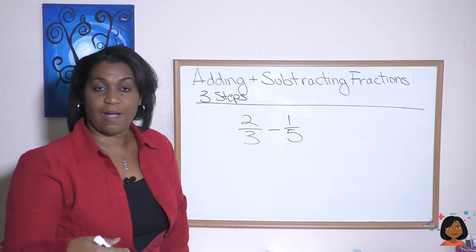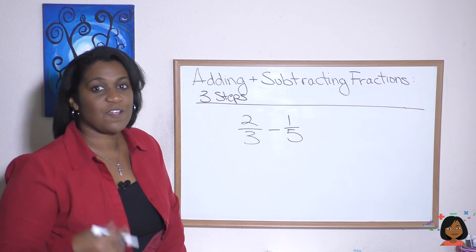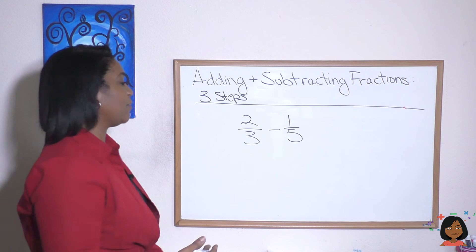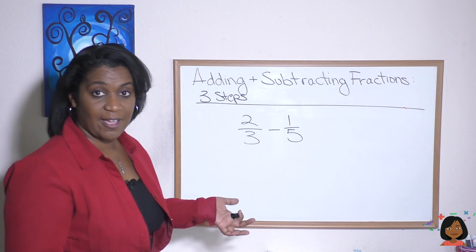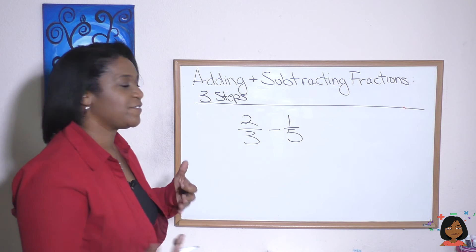Let's try it again with this problem. Two thirds minus one fifth. Let's use our SOS technique. First, we're going to shape. We don't have a common denominator, so let's give it one. Now we have a three and a five. Our least common multiple between the two is going to be 15. Here we go.